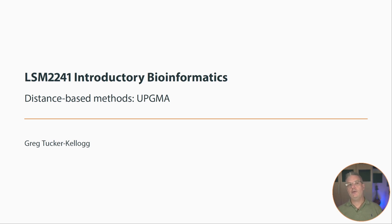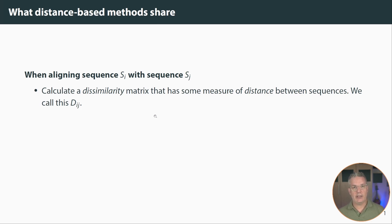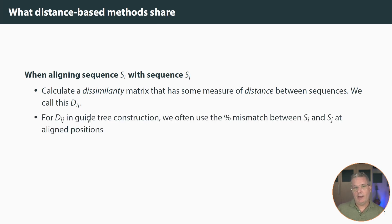UPGMA is one of two distance-based methods that are used to construct phylogenetic trees. The other one is neighbor joining, and I'll have a separate video about that. Both UPGMA and neighbor joining share some commonalities. One is that when working with a multiple sequence alignment and considering two sequences S sub i and S sub j, we calculate a dissimilarity matrix between the sequences. That dissimilarity matrix will have some measure of distance between sequences, which we call D sub ij, and the whole matrix D. We've already used this in a guide tree, where we often use something simple like the proportion of mismatch.